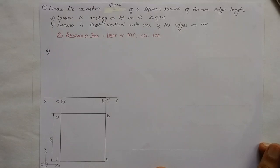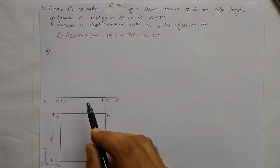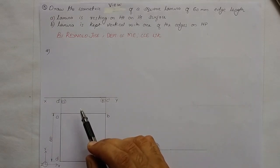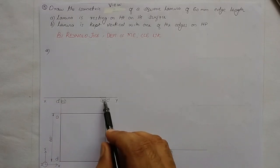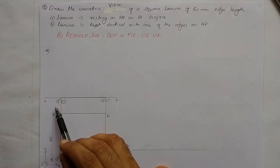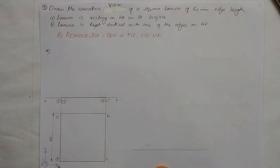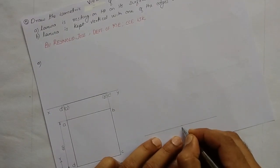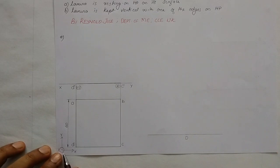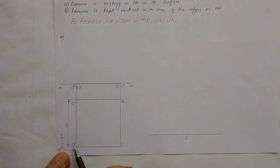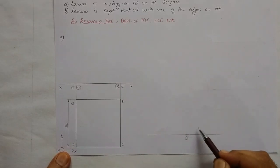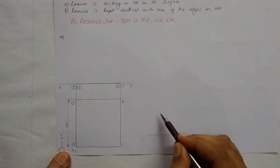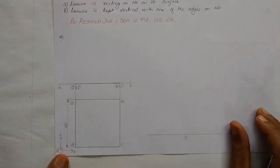As usual, the first step is to choose the origin. We choose the origin from the front view — a point visible in the front view along the base. Along the XY line, the visible point on the left-hand side is D, so we take point D as the origin. Along the X direction and along the Y direction we are having 60 mm each, so we take 60 mm to the right and 60 mm to the left at an angle of 30 degrees.